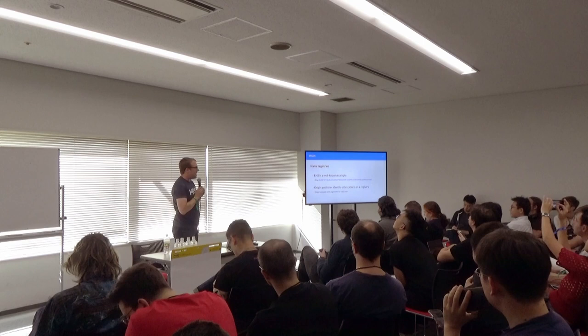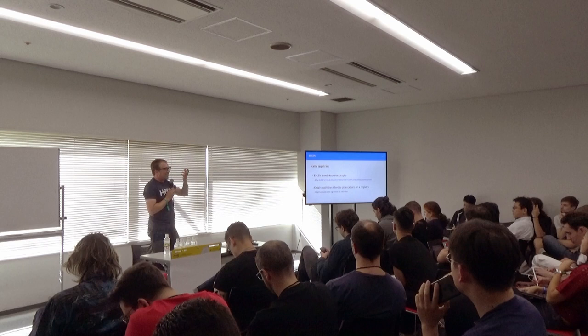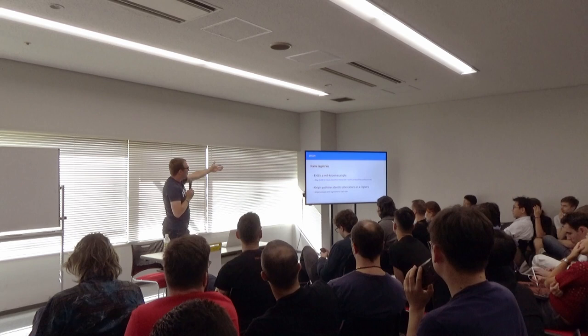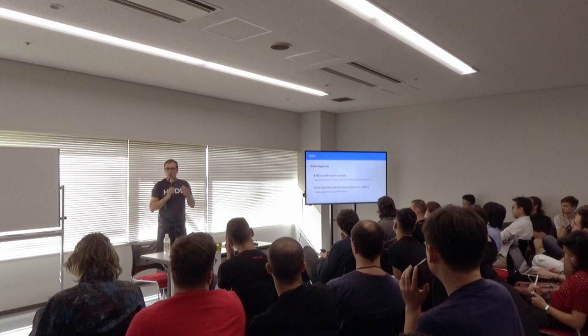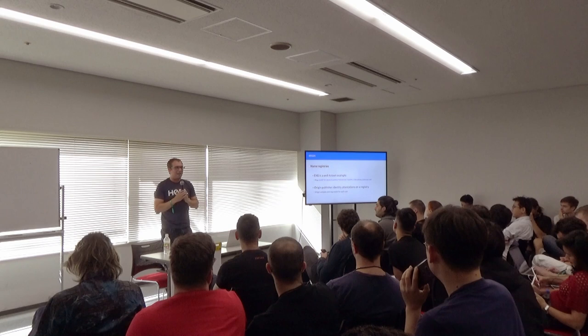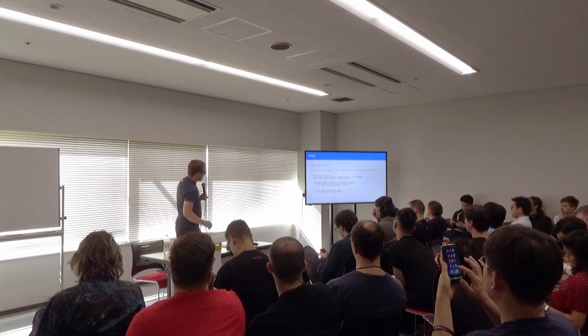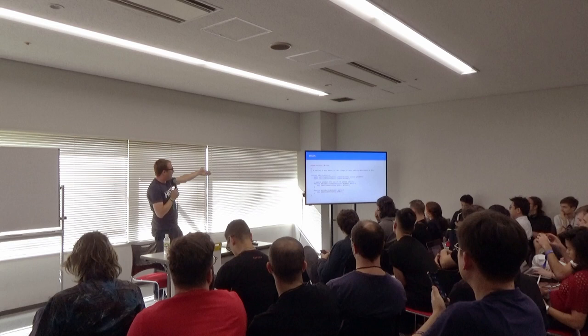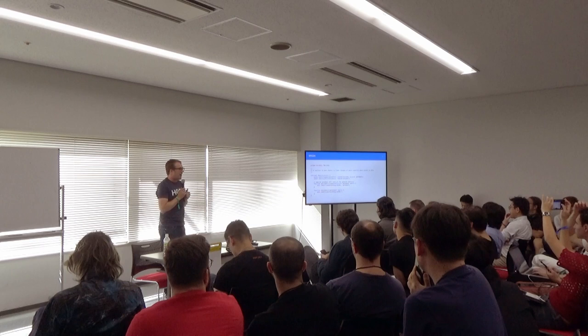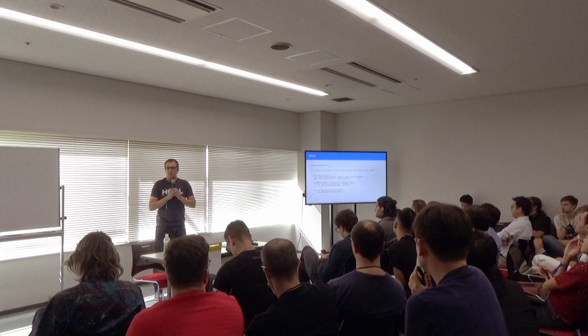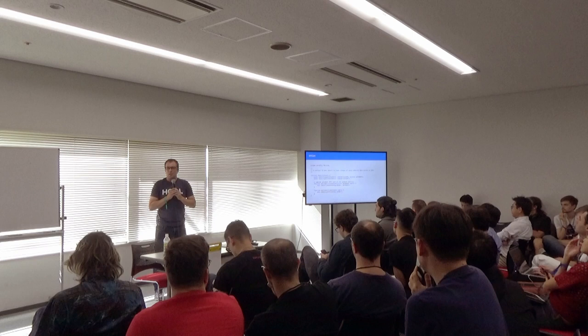Name registries are another concept to be aware of. ENS is probably the best known example — you can map a friendly name like joshfaser.eth to an address. Origin has an identity contract where we publish identity attestations for all users on our marketplace. But as you might guess, we don't actually store that data — we just emit events. The contract has basically two functions: emit identity updated, with the message sender's wallet and an IPFS hash of attestations, and identity deleted, which unpins your data from IPFS if you ask us to.